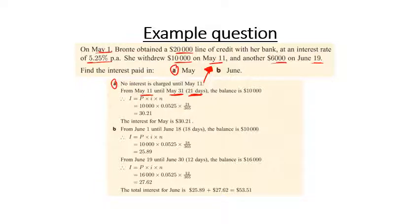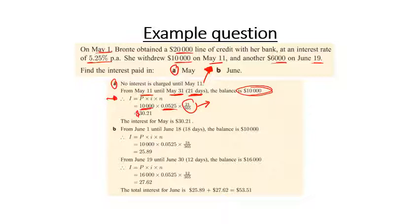From May 11th until May 31st is 21 days. For those 21 days the balance of her line of credit is $10,000. Using the simple interest formula — principal of $10,000, multiplied by the interest rate, multiplied by 21/365 to convert days to years — we get interest of $30.21 for May.